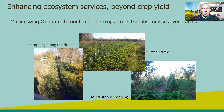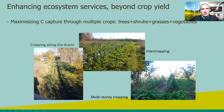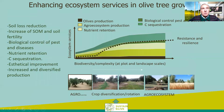One main aim of crop rotation and diversification is enhancing ecosystem services beyond crop yield. One important ecosystem service is maximizing carbon capture through multiple crops — for instance, the cultivation in the same field of trees, shrubs, grasses, and vegetables. Here are some examples: cropping along the drains, intercropping with different crops, and multi-story cropping, such as vegetables under the trees of an orchard.